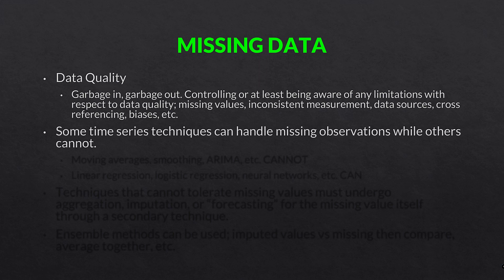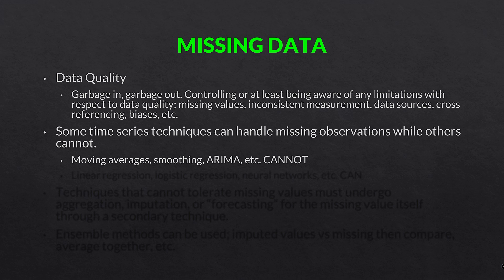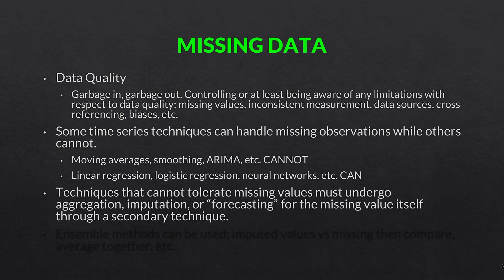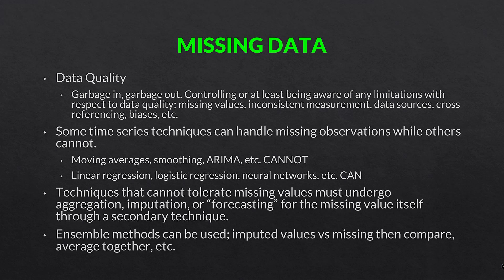Some time series techniques can handle missing observations while others cannot. Moving averages, smoothing, and ARIMA cannot handle missing observations, whereas linear regression, logistic regression, and neural networks can. So sometimes having missing values is okay depending on the technique you are using. Techniques that cannot tolerate missing values must undergo aggregation, imputation, or forecasting for the missing value itself through a secondary technique. Another approach is using ensemble methods — use one method where missing values are allowed, then impute values into one where they cannot be used, and compare or average the two.